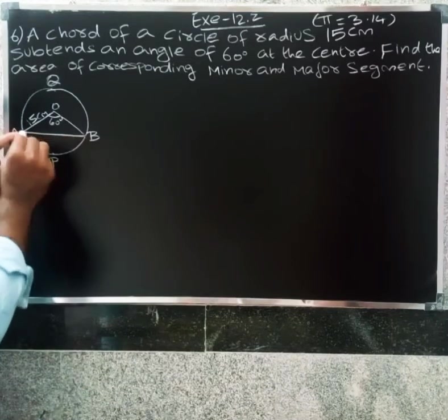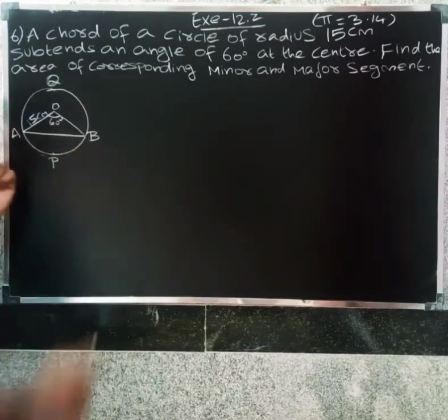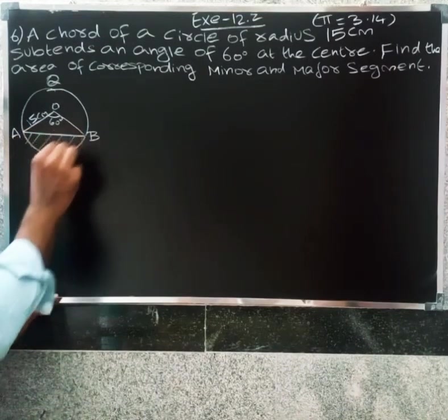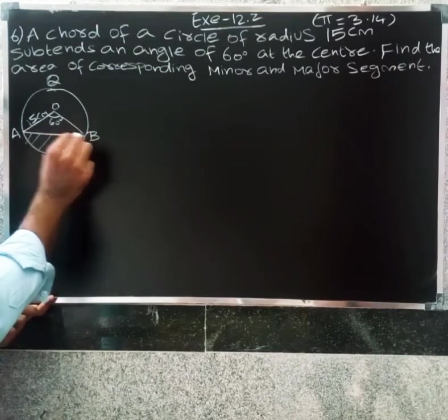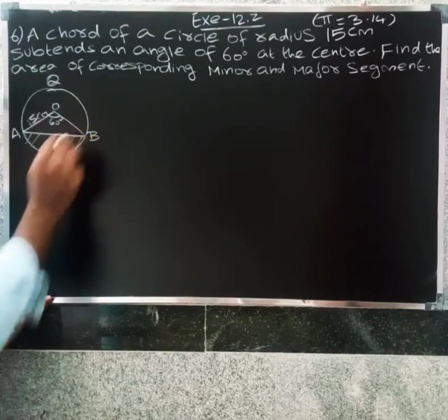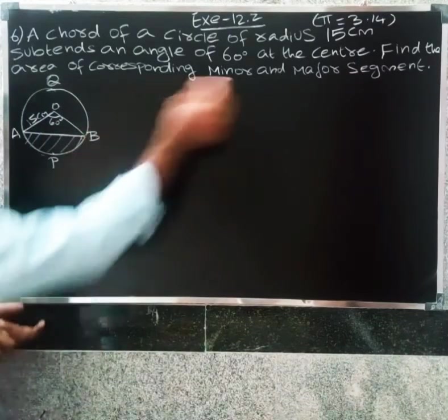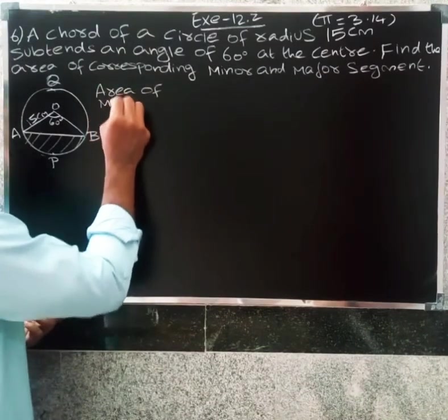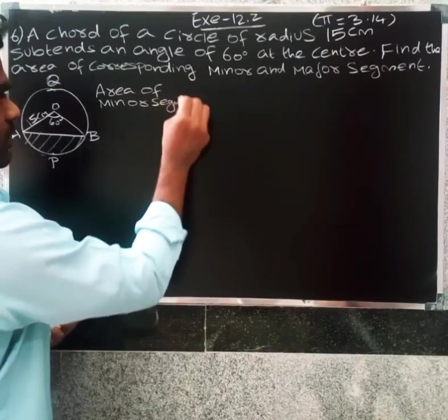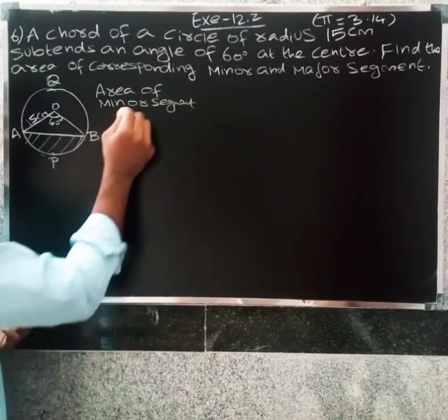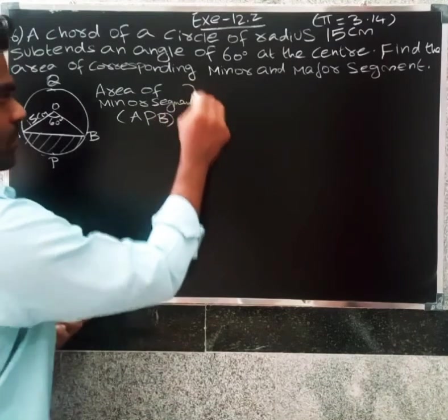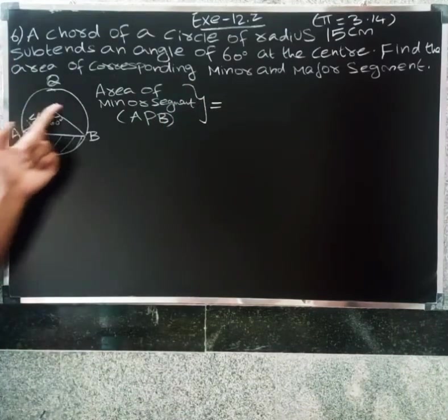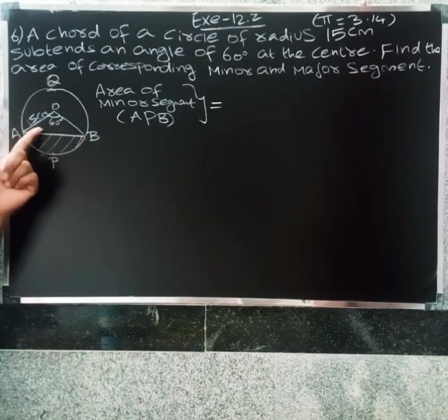Major segment under the A-Q-B. So A-Q-B is the major segment. In the pattern will get the minor segment, then the major segment. First I'm going to find the area of minor segment. The formula: area of sector minus area of triangle.